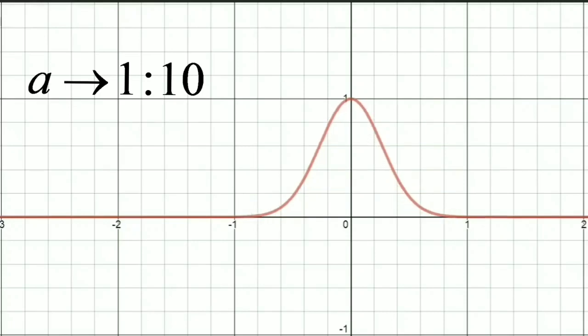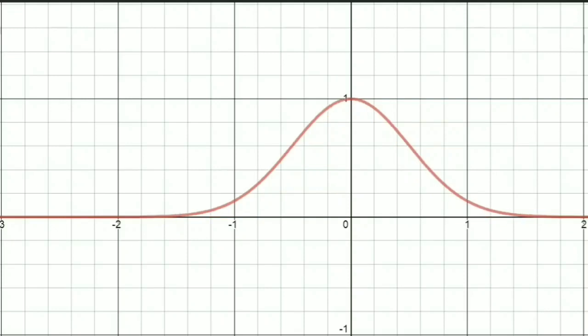When we integrate the Gaussian from minus infinity to plus infinity, what we actually get is the area under this curve. So when the value of a is increased, the area under the Gaussian curve is decreased. And when the value of a is decreased, the area under the curve is increased.